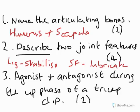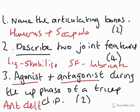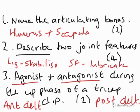For the agonist and antagonist during the up phase of a tricep dip: in the up phase the arm comes back forward and begins to flex, so the anterior deltoid is the agonist, and the antagonist would be the posterior deltoid. The agonist is the anterior deltoid, and the antagonist is the posterior deltoid. Thank you for listening, and I'll see you tomorrow for another revision session. Goodbye.